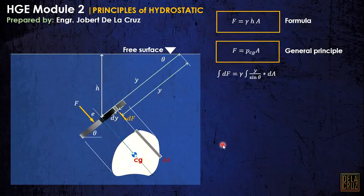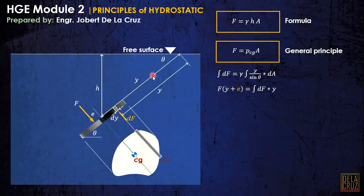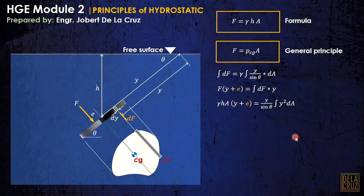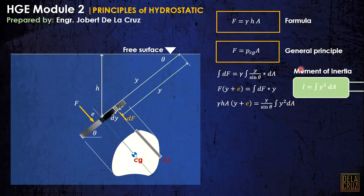To find eccentricity e, we equate the moment produced by the total force F about the free surface axis to the moment of the differential forces. That gives F times (ȳ + e) equals the integral of dF times Y. Substituting F = γh̄A and dF = γ(Y/sin θ)dA, and multiplying by Y gives Y² dA. Bringing out sine of theta, we get the integral of Y² dA, which from calculus is the moment of inertia I.